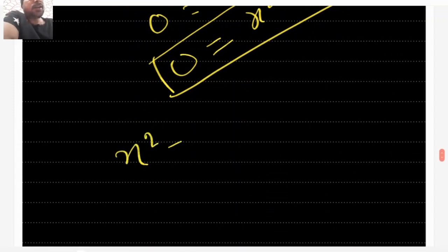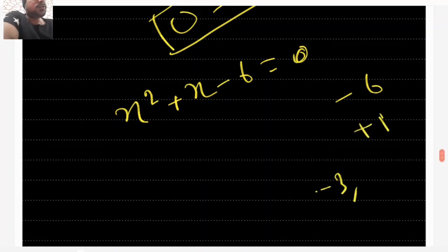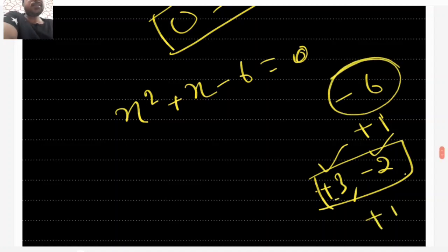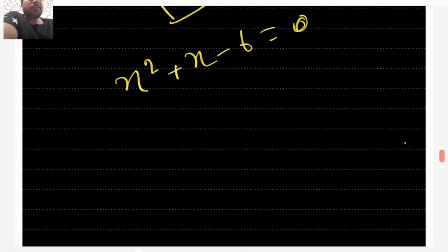The equation is x² + x - 6 = 0. We need two numbers whose product is -6 and whose sum is +1. The numbers are +3 and -2, because +3 + (-2) = +1 and +3 × (-2) = -6. So these are the two factors.